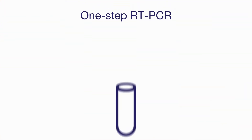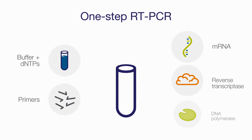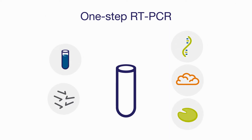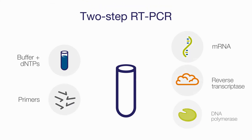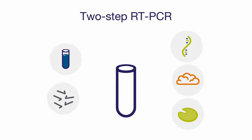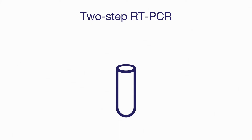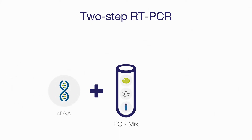Since we're already talking about reverse transcription, let's clarify what we mean by one-step or two-step RT-PCR. In one-step RT-PCR, the reverse transcription and PCR reactions are carried out in the same tube. In two-step RT-PCR, reverse transcription is done first as a separate reaction. After that, a portion of the cDNA is added to a PCR mix for amplification.